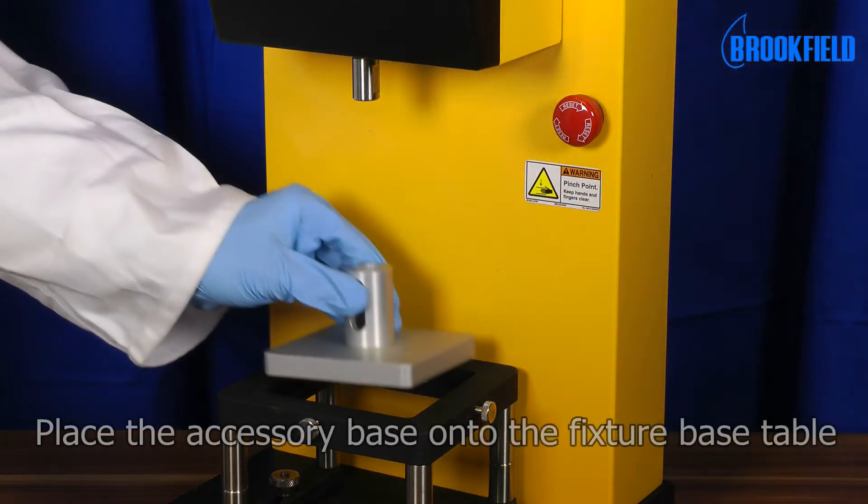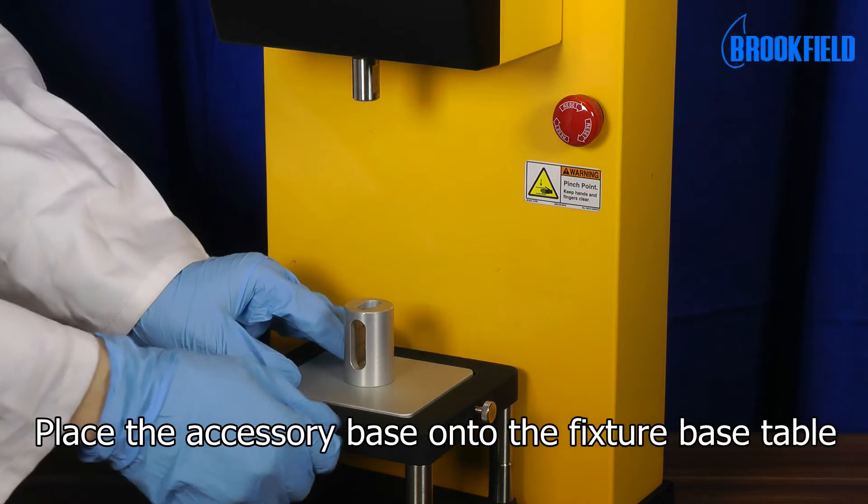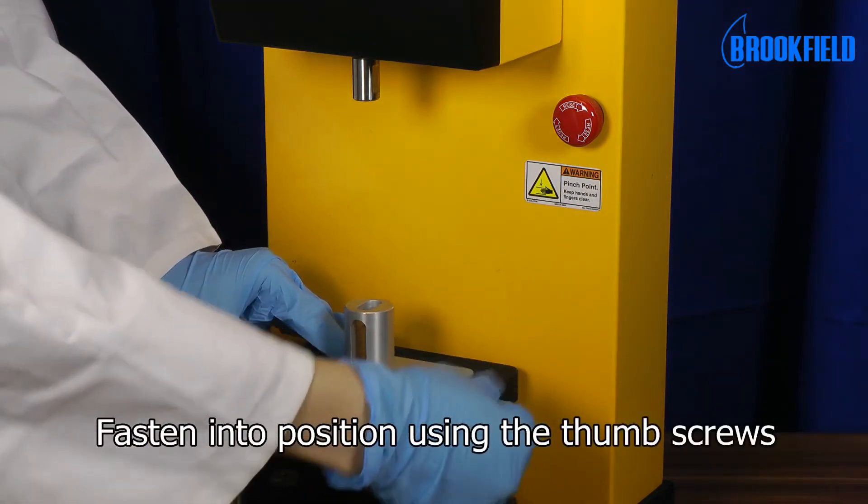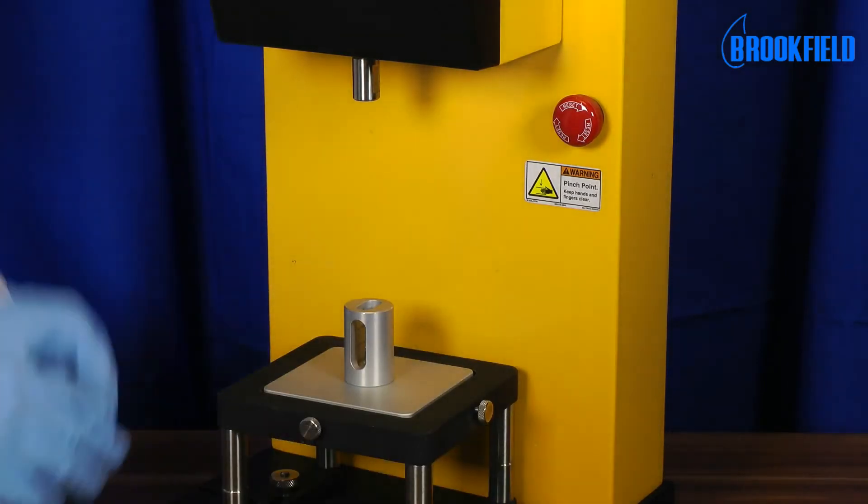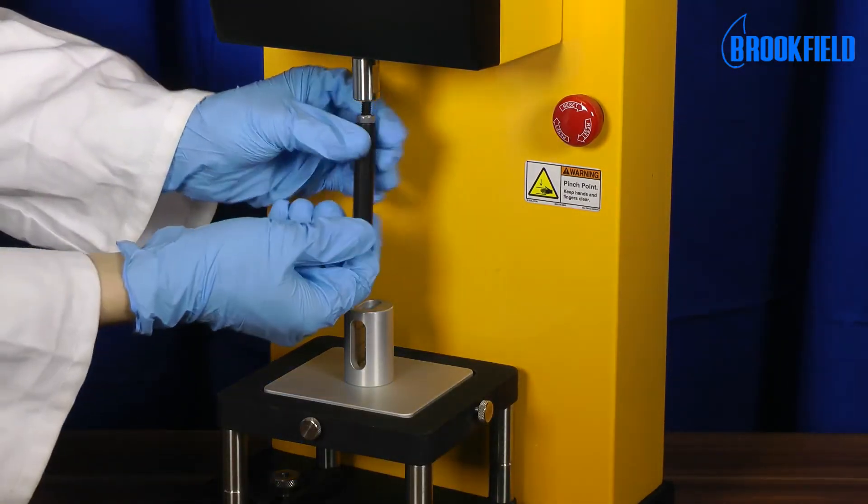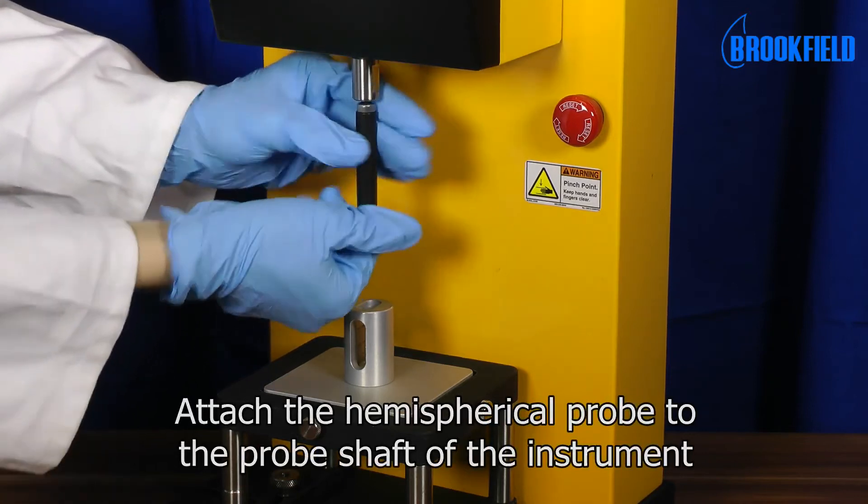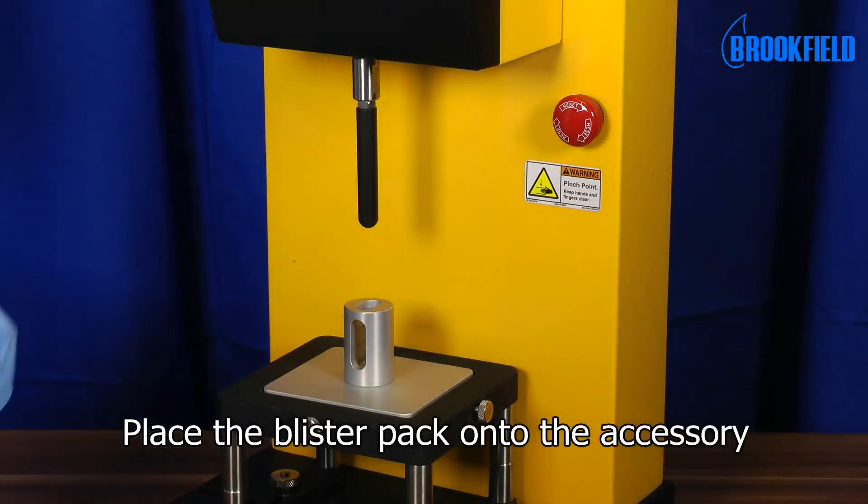To set up the test, place the accessory base onto the fixture base table and fasten into position using the thumb screws. Attach the hemispherical probe to the probe shaft of the instrument and place the blister pack onto the base accessory.